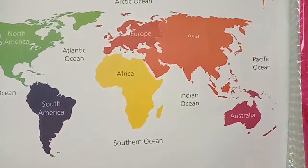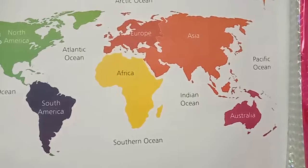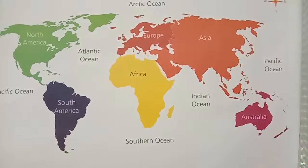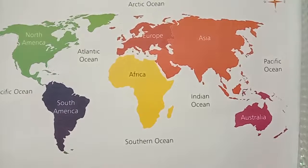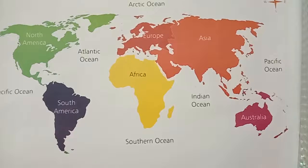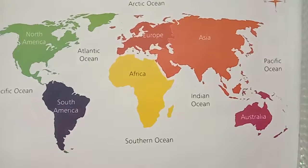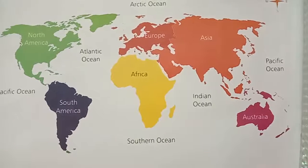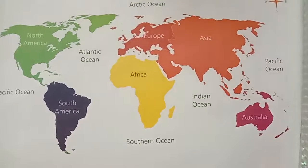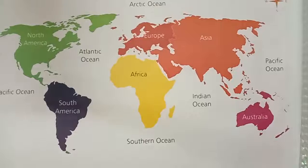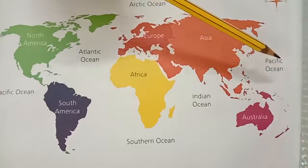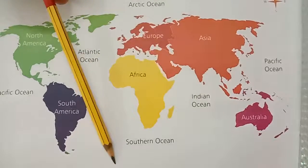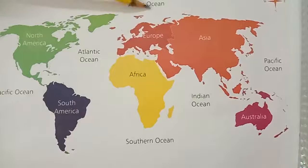Seas are generally part of the oceans, partially enclosed by land; they are smaller than oceans. There are many seas such as Arabian Sea, Black Sea, Mediterranean Sea, and Dead Sea. The five oceans are: Pacific Ocean, Atlantic Ocean, Indian Ocean, Southern or Antarctic Ocean, and Arctic Ocean.